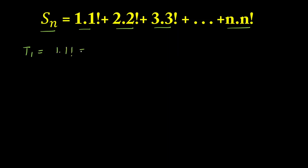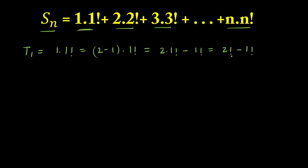For the first term: 1·1! — I can write 1 as (2 − 1), multiplied by 1! as it is. Multiplying inside gives 2·1! − 1!, and since 2·1! = 2!, this becomes 2! − 1!. This is one classic example of a telescopic series.